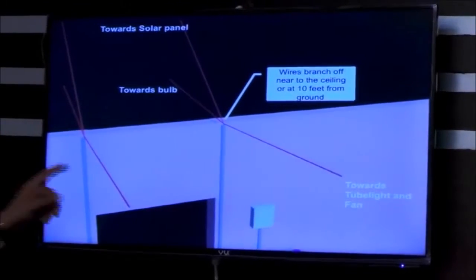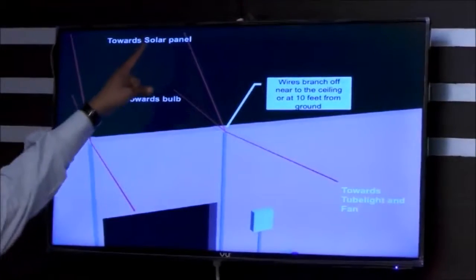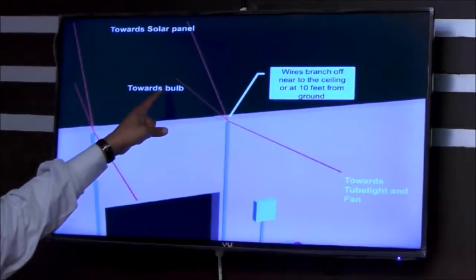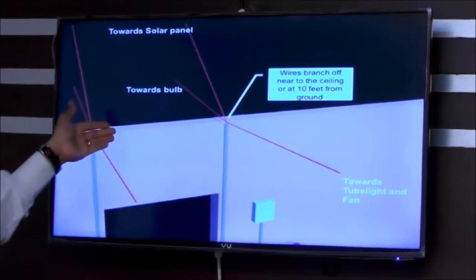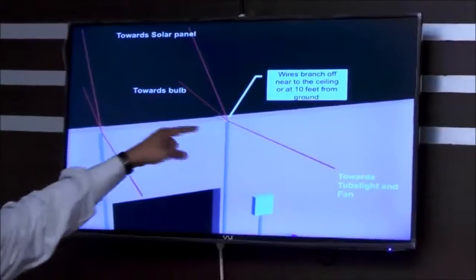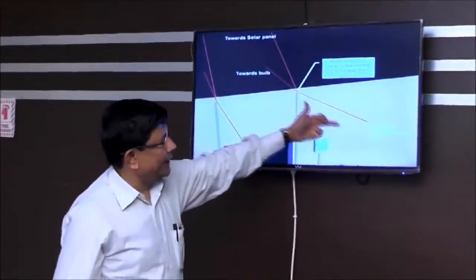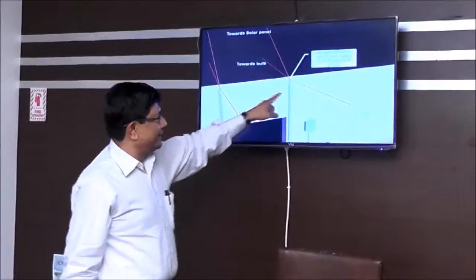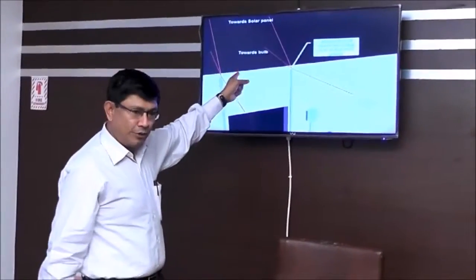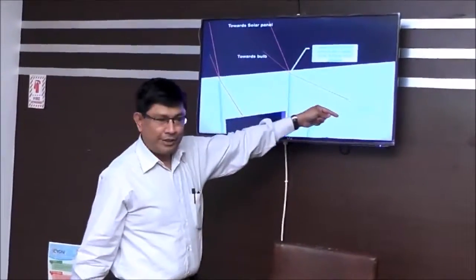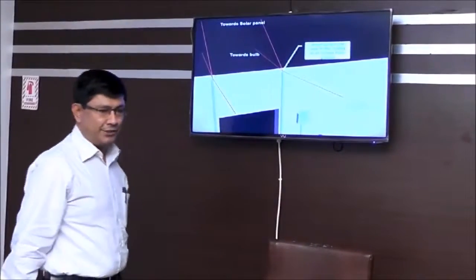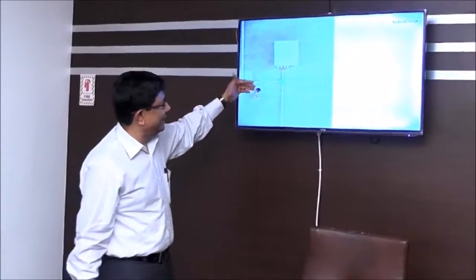On the top, if you look at it, one will go towards the solar panel. This is the bulb which is for the emergency. They normally need the emergency on the outside of the home, so you can take it outside from there. From here it can go to the tube light at the front. So there are three sets of wire: one wire will go towards the emergency load, one for the normal load, and one for the solar panel.